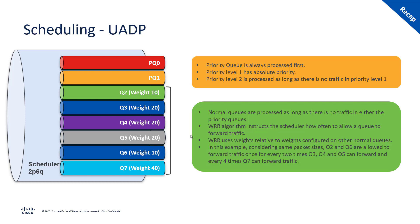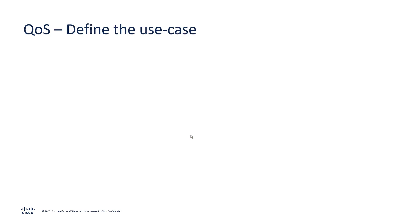If we want to prioritize certain normal queues over others, we can define a weight associated to each queue. Higher weight means that particular queue is allowed to send traffic more frequently. For example, if Q2 has a weight of 10, Q3 has a weight of 20, and Q7 has a weight of 40, then Q2 can send once for every two times Q3 sends, and once for every four times Q7 sends. Now that we have a refresher on QoS components, let's start building the configuration.